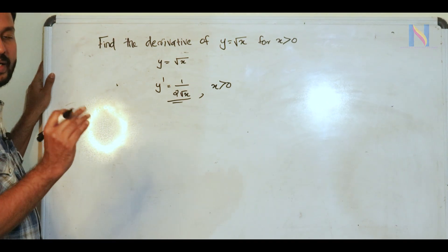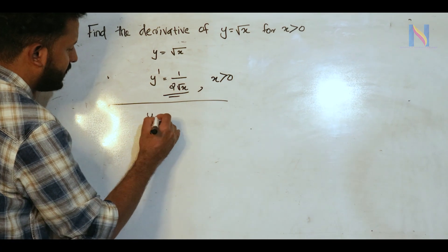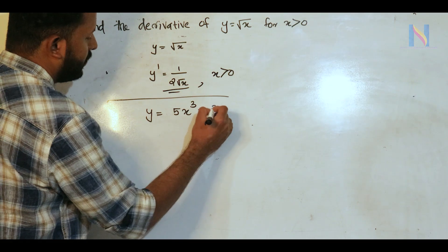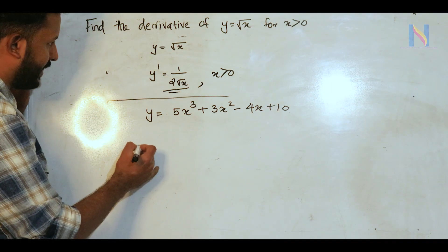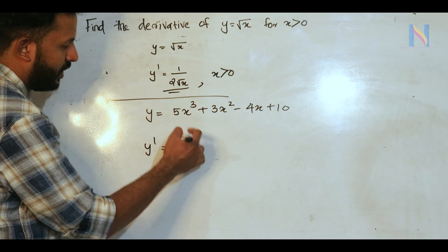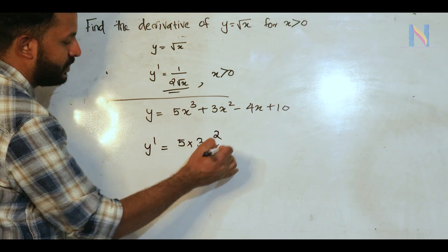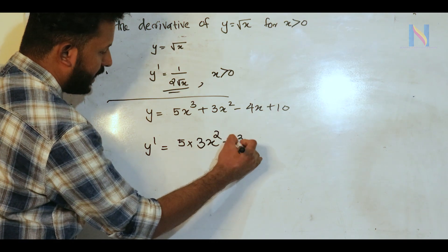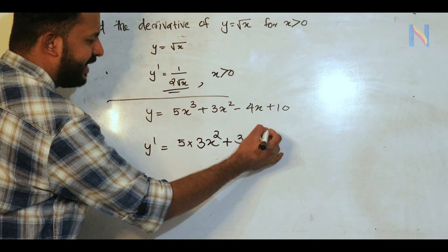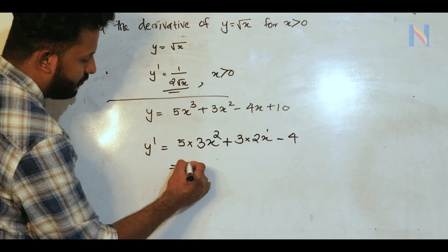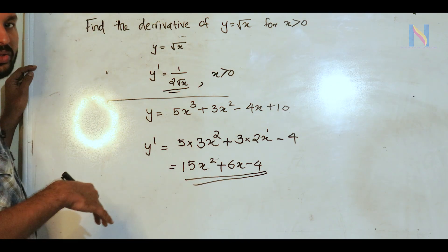The next question: find the derivative of y = 5x³ + 3x² - 4x + 10. Using basic differentiation rules: the derivative of 5x³ is 15x², the derivative of 3x² is 6x, the derivative of -4x is -4, and 10 is a constant so its derivative is 0. The answer is 15x² + 6x - 4.